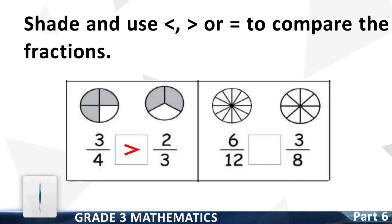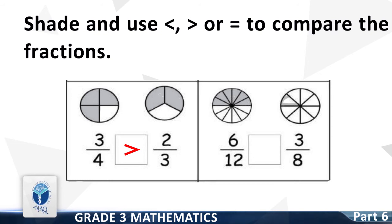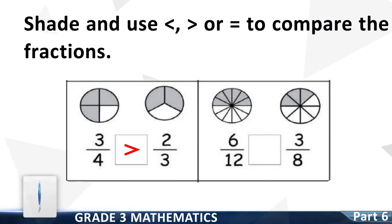Next question: 6 by 12 and 3 by 8. Now shade the shape of 6 by 12. Good, 6 shapes are shaded in 12. Now shade the 3 by 8 fraction. Good, 3 shapes are shaded in 8. Now compare both fractions by using less than, greater than, or equal sign. Good. The correct sign is greater than. It means 6 by 12 is greater than 3 by 8.